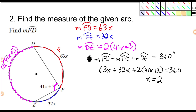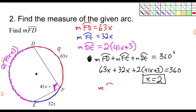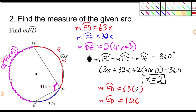X is equal to 2. Now I can find the measure of arc FD. The measure of arc FD is equal to 63 times 2. What's 63 times 2? That's 120 plus 6, so 126. So this arc is equal to 126 degrees.